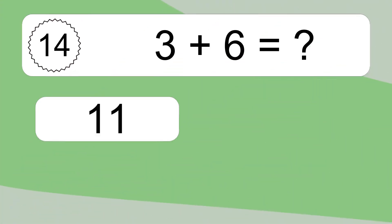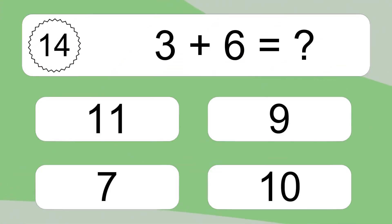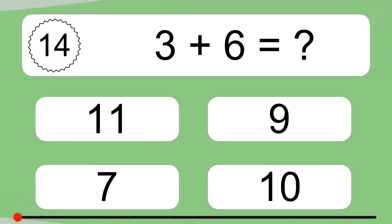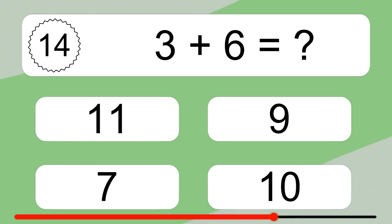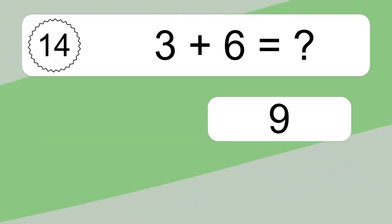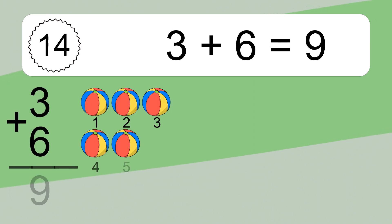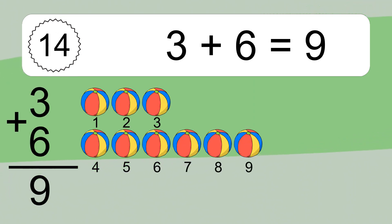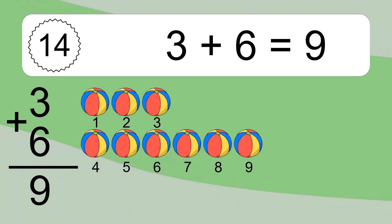3 plus 6 equals what? 3, 4, 5, 6, 7, 8, 9. Let's count it. 1, 2, 3, 4, 5, 6, 7, 8, 9.